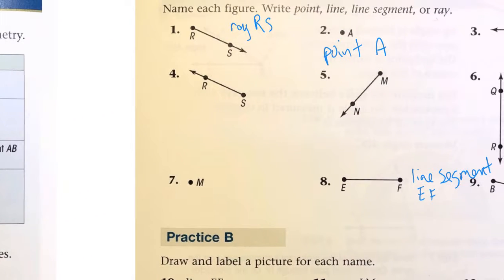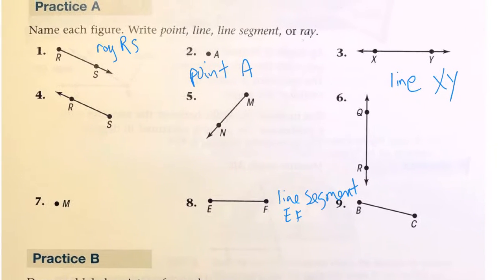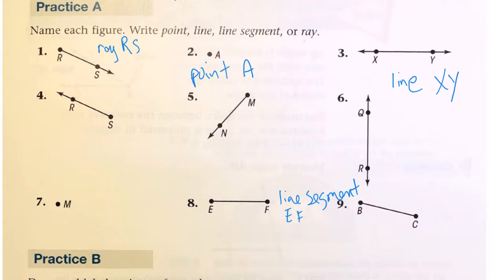And so, that's how it matched with our practice. We've got a ray. Here's another ray for number 4. This would be ray SR. This would be a ray MN.